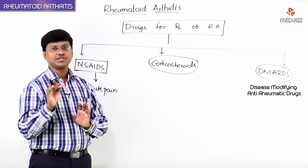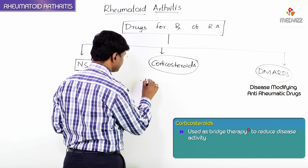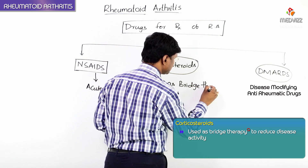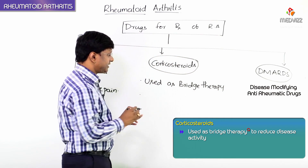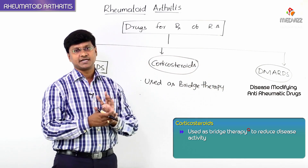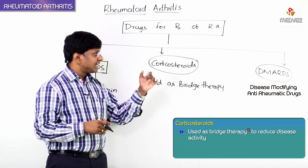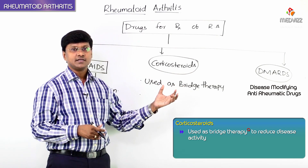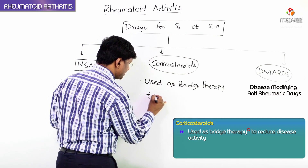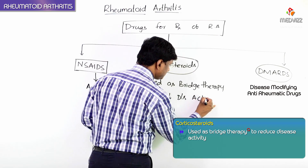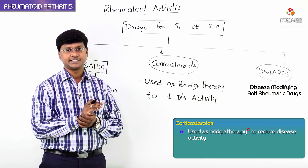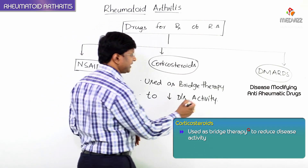Corticosteroids are used as bridge therapy — bridge therapy for the DMARDs. That means until the effect of the disease modifying anti-rheumatic drugs has started, the drugs used to reduce disease activity are corticosteroids. So they are used as bridge therapy to reduce disease activity until the effect of the DMARDs begins.